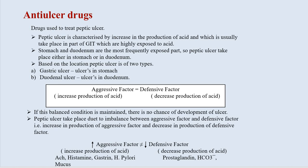For the development of peptic ulcer, two factors are responsible: aggressive factors and defensive factors. Aggressive factors are those which increase the production of acid, and defensive factors are those which decrease production of acid. When both factors are in a balanced state, there is no development of ulcer. But if there is imbalance — increase in aggressive factors and decrease in defensive factors — ulcers are developed. Aggressive factors include acetylcholine, histamine, gastrin, and H. pylori; defensive factors include prostaglandin, bicarbonate, and mucus.